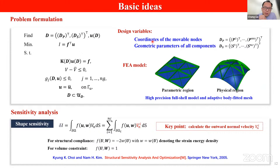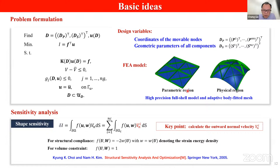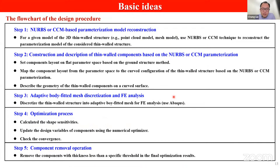The mathematical formulation minimizes the compliance of the whole structure. The design variables include only the coordinates of multiple mobile nodes and the geometrical parameters of the components. In the finite element analysis, we use an efficient four-node shell model and an adaptive body-fitted mesh. For sensitivity, the key is to find the relationship between the normal velocity and the design variables; since we have explicit geometry information of each edge of the ribbon components, we can easily obtain the shape sensitivity.